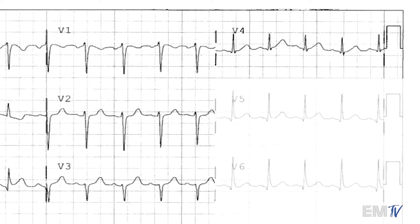The ST segment starts at the J point. The J point should start on the isoelectric line, which I've already drawn out here. The isoelectric line is that invisible continuous line across the electrical baseline, representing a period of time where the cardiac cells are neither repolarizing nor depolarizing. ST segment elevation is defined as 1mm of elevation above the isoelectric line in limb leads, and 2mm above the isoelectric line in precordial leads. You can quickly measure this using the small individual squares — each one represents 1mm. Judging by what I'm seeing in the anterior leads, I'm not seeing any ST segment elevation.